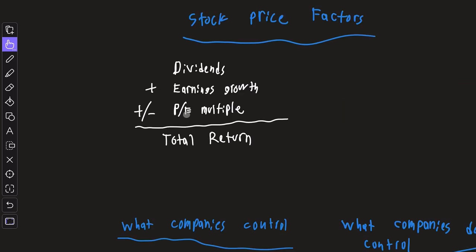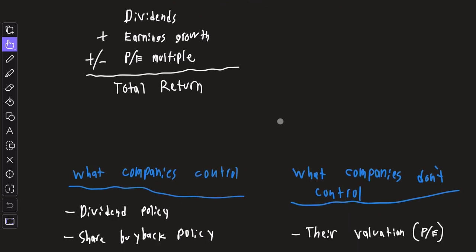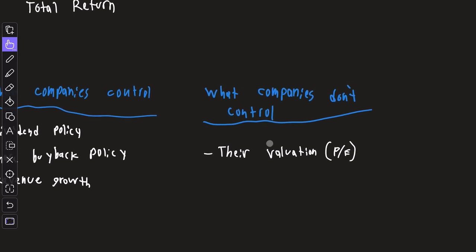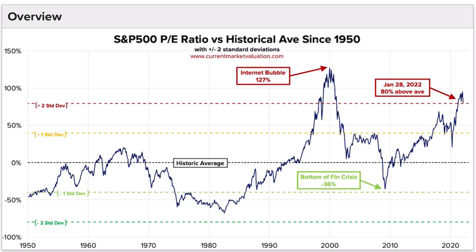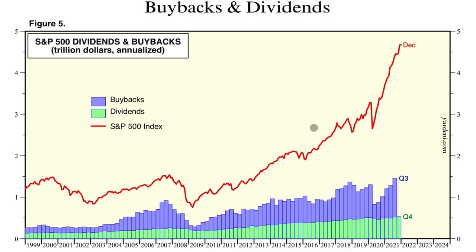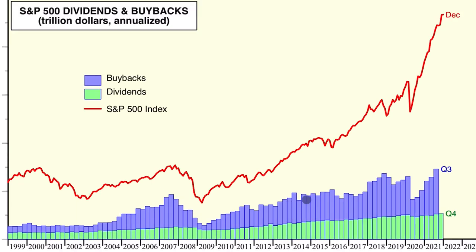The remaining factor is the PE ratio, or the multiple applied to the company's earnings, and this is something companies cannot control. Right now the multiples applied to earnings are near an all-time high. This chart on the S&P 500 is super insightful — the green bars are dividends, the blueish purple are stock buybacks, and the red line is the actual S&P 500 index. It helps to visualize the disconnect between the fundamentals and the valuation.